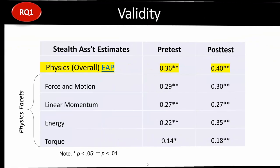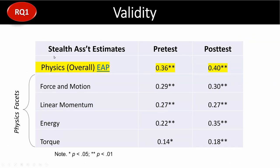For validity, our in-game estimates — overall and by facet: force and motion, linear momentum, energy, and torque — significantly correlated with pre-test and post-test scores. Force and motion estimates correlated specifically with force-and-motion items on the pre- and post-tests. This was encouraging: we claim to be measuring these constructs in the game, and they do correlate significantly with external measures.